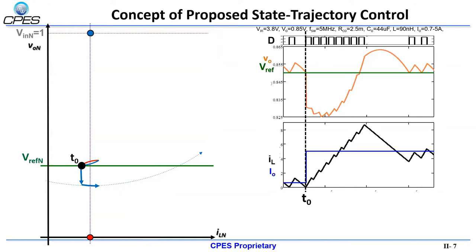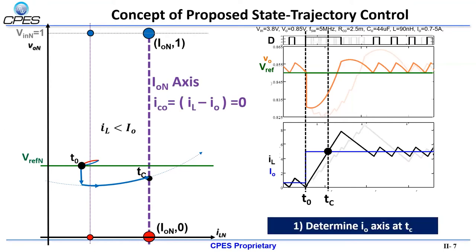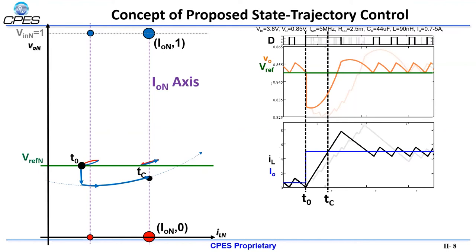Instead of the conventional method, the proposed control uses the state plane trajectory to achieve the best transient possible. First, when the load step-up transient occurs at T0, the trajectory will diverge from the steady state loop to below v-reference. The converter will continue to follow the on-trajectory path, which crosses the output current axis at Tc. At Tc, the radius of the on-trajectory is obtained to project the continued on-trajectory circle. Also at Tc, the inductor current equals the load current. Knowing this, the new steady state location can be approximated as the intersection of v-reference and the load current.